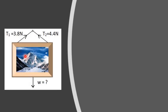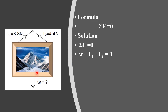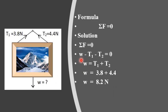As you can see in the diagram, T1 and T2 are the tensions along the strings, and the weight acts vertically downward. To solve this, we use the first condition for equilibrium: the sum of all forces acting on the object is equal to zero. There are three forces acting on the picture frame — T1, T2, and the weight. Since tension is opposite to weight, we take tension as negative and weight as positive. Rearranging the equation: W = T1 + T2. Substituting the values, the weight of the picture is 8.2 N.